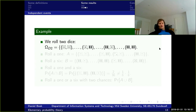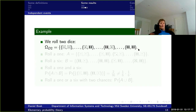Now let's say we roll two dice and have a new sample space. Since we roll two dice, each outcome is one outcome for the first die and one for the second. So the first can be one and the second can be one, two, three, four, five, or six — and we go through all combinations of the two dice as outcomes.